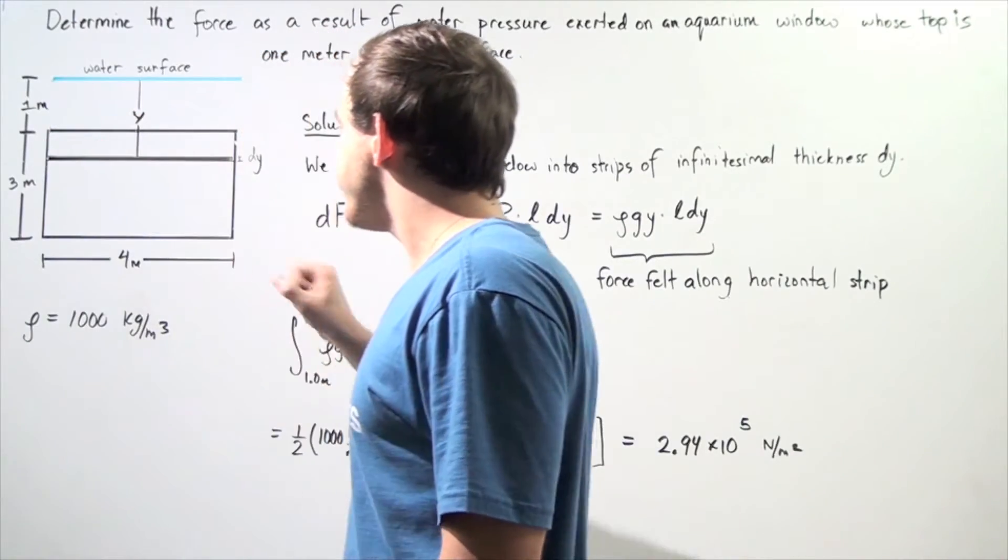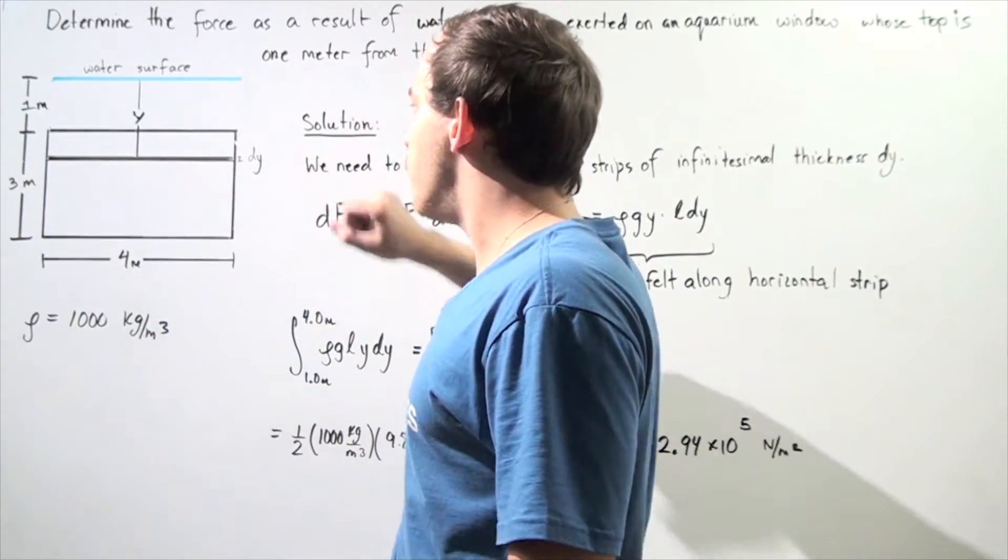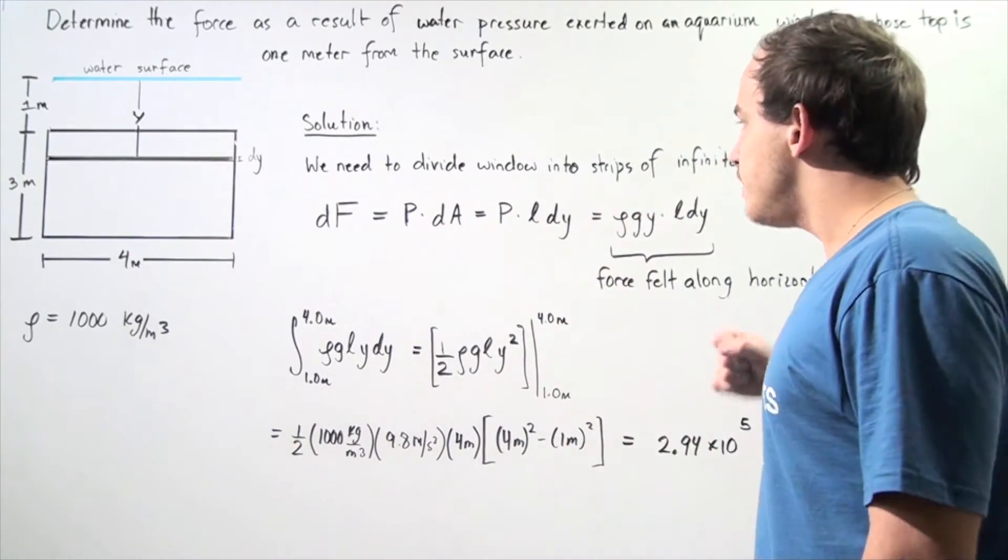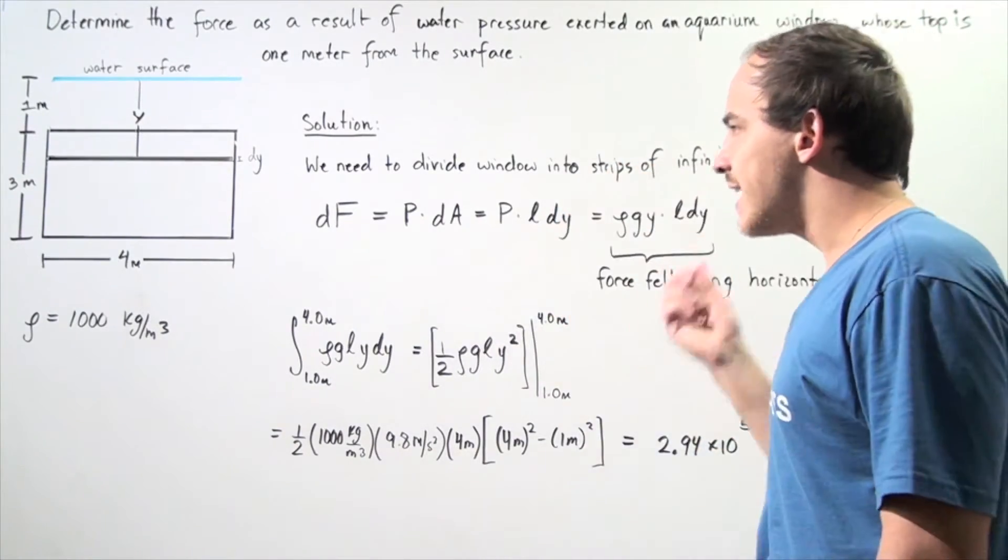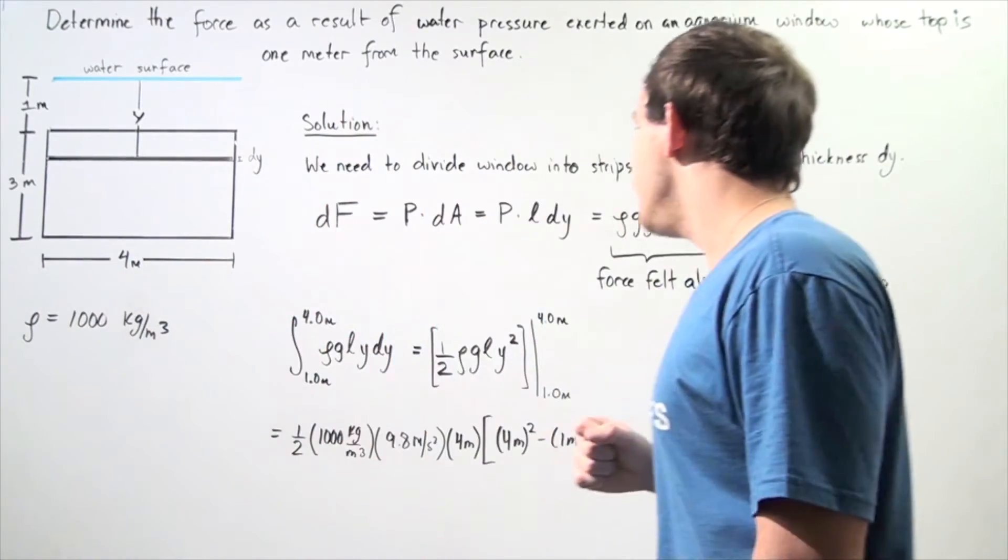the area of this strip is simply the length of this strip multiplied by dy. So dA becomes L multiplied by dy, and L is a constant because it's given to be four meters.